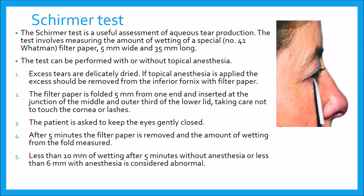In practice, topical anesthesia cannot abolish all sensory and psychological stimuli for reflex secretions. The test is performed as follows: excess tears are delicately dried. If topical anesthesia is applied, the excess should be removed from the inferior fornix with filter paper. The filter paper is folded 5 mm from one end and inserted at the junction of the middle and outer third of the lid. Care is taken not to touch the cornea or lashes. The patient is asked to keep the eyes gently closed. After 5 minutes, the filter paper is removed and the amount of wetting from the fold is measured. Less than 10 mm of wetting after 5 minutes without anesthesia, or less than 6 mm with anesthesia, is considered abnormal. Results can be variable, and a single Schirmer test should not be used as a sole criterion for diagnosis of dry eye, but repeatedly abnormal tests are highly supportive.